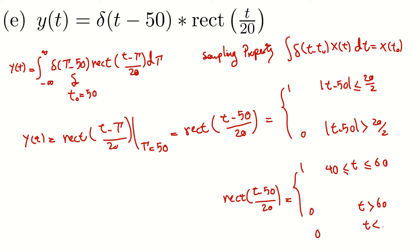So I can now easily draw the signal. Let's assume this is 40 and this is 60, so the value of the signal is 1 in this interval and is 0 for the rest of the time. So this is rectangular of (t - 50)/20.